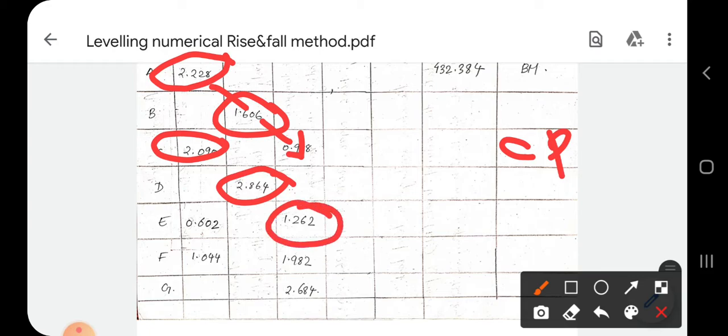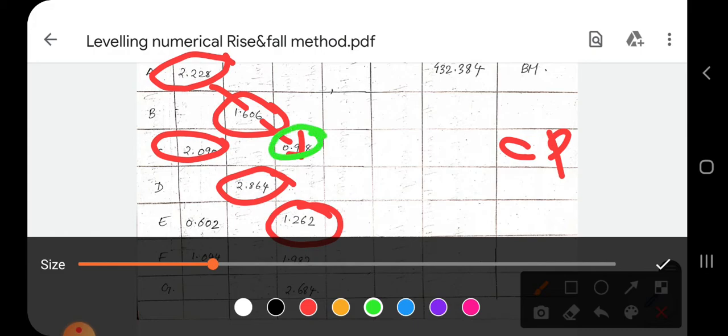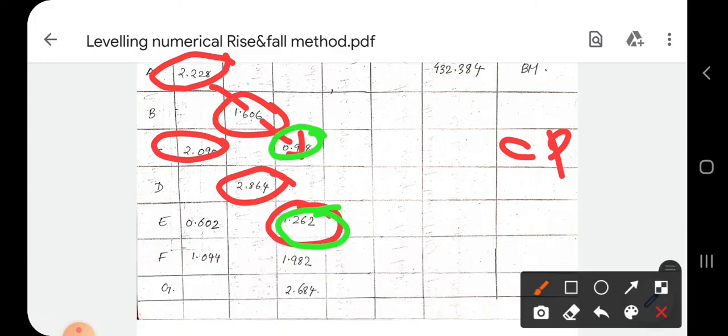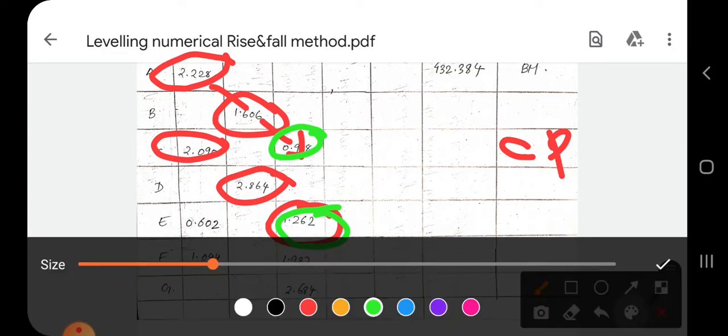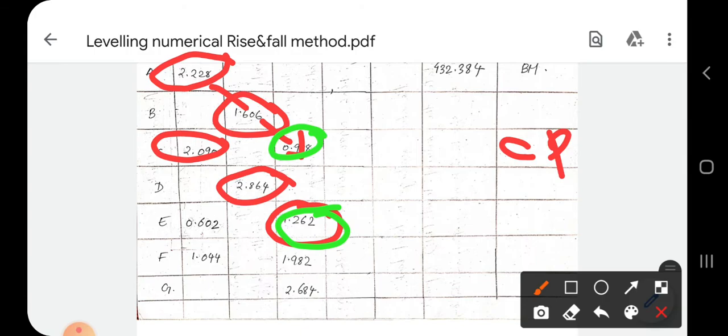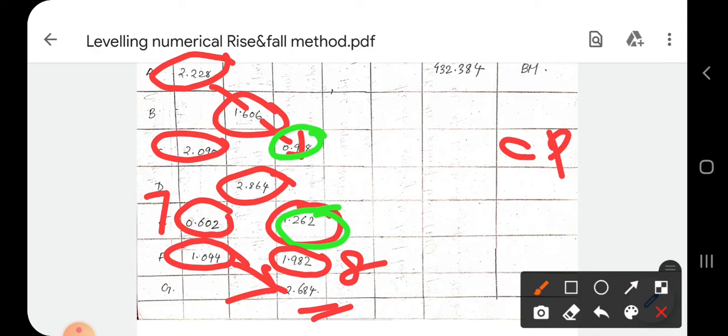Let us check. Instrument shifting after third reading: first three readings are backsight, then intermediate readings, then foresight. After sixth reading, shift again. Eighth reading is also a shift point. Next reading is backsight. The last reading, tenth reading, is foresight: 2.68 meters.